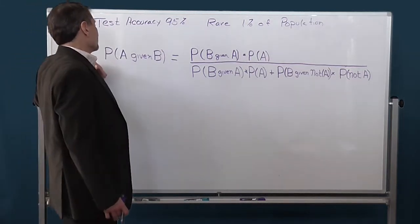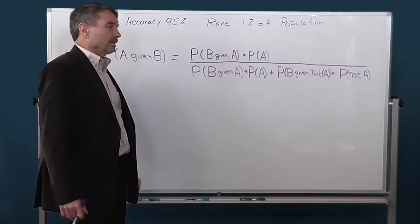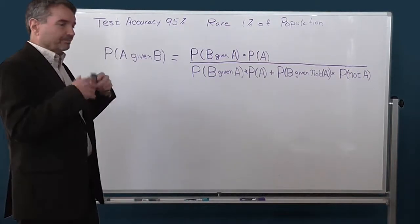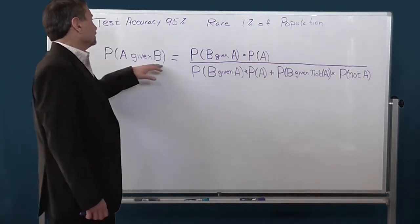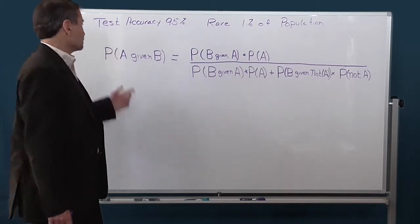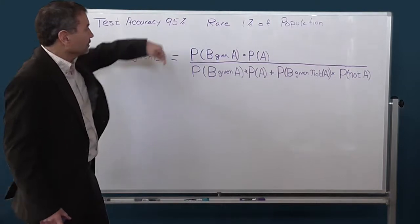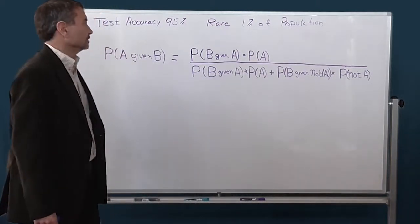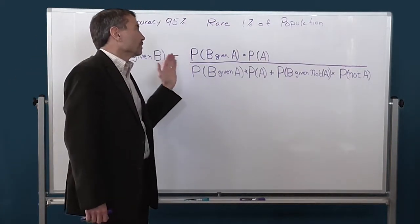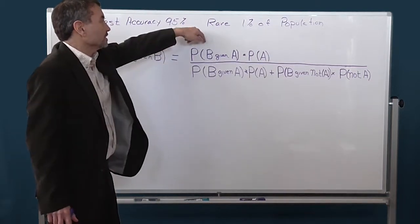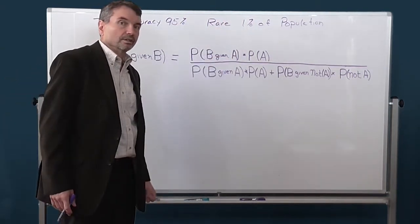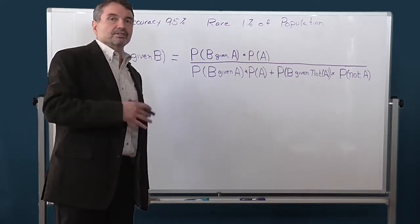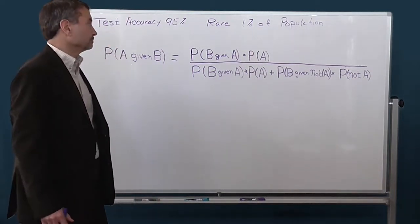The base theorem says: take the probability of A given B — that's kind of an afterthought. It basically asks: given that I tested positive for the disease, what is the probability that I have it? That is different from the probability of B given A, which asks: what is the probability that I'm going to test positive given that I have the disease? There are two differences between those statements, and that is probably the key to understanding Bayesian statistics and the area that is most misunderstood.